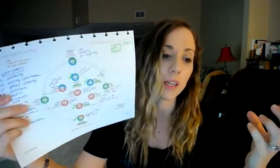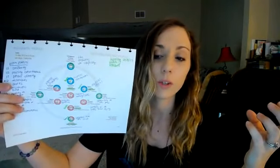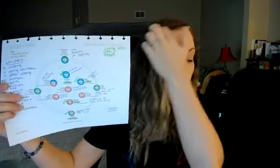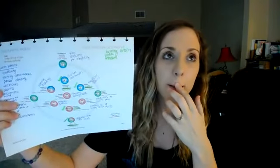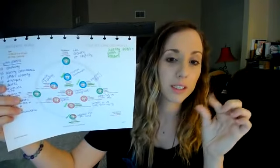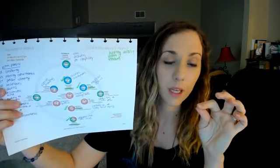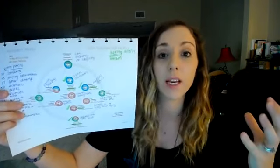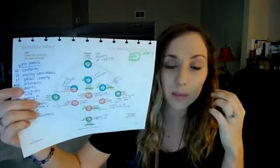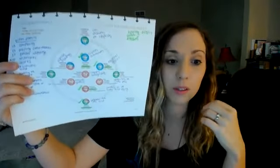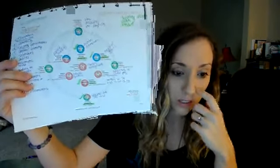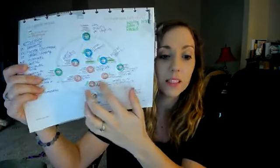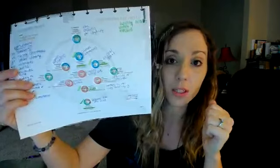I'm talking about Gene Keys right here, but I'll do another video for Human Design because the channels are different — they're two gates coming together, and if you have a complete defined channel, that's a strength or weakness depending on how it shows up. After you do the Activation Sequence, you move on to the Venus Sequence, which is all about opening your heart through relationships.